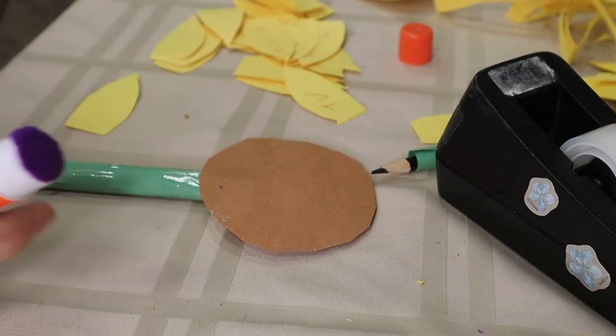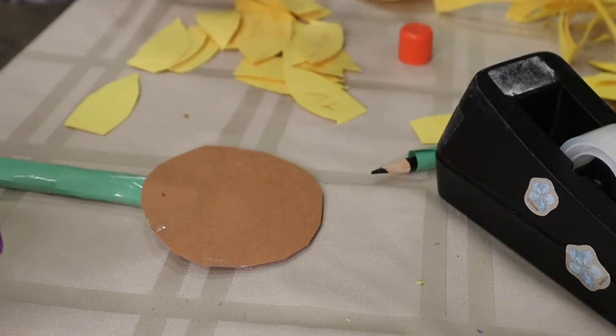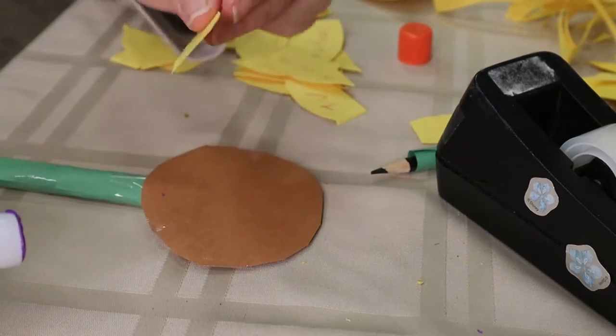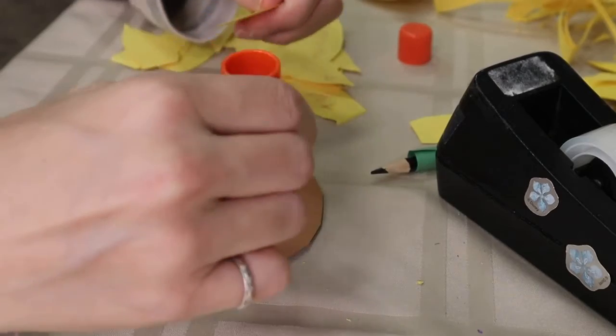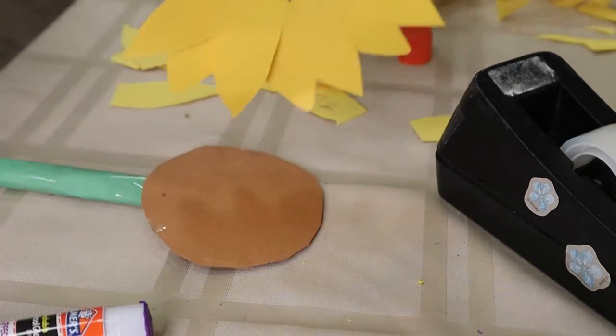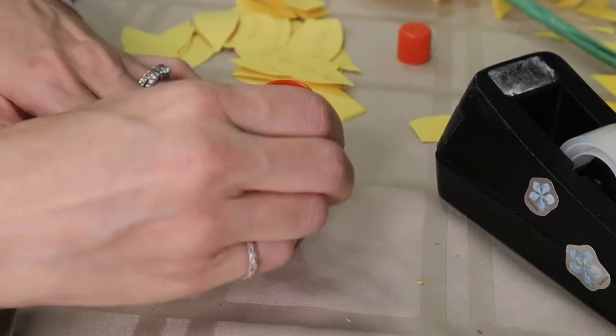Next, you're going to attach your petals. So you're going to do any plain petals first around the very outer edge, and then you're going to do a second layer on the inside in between where each of those petals land.